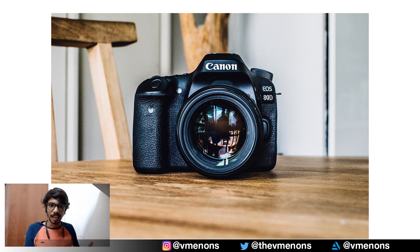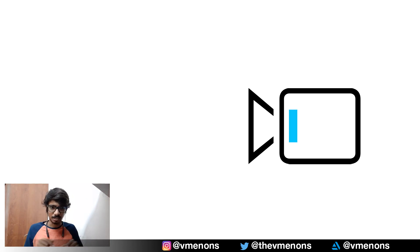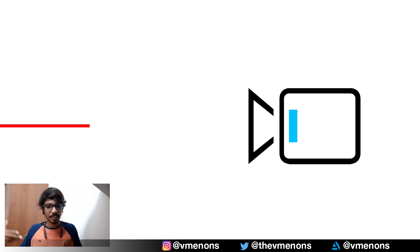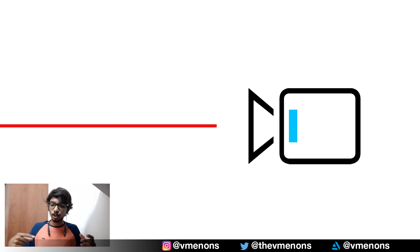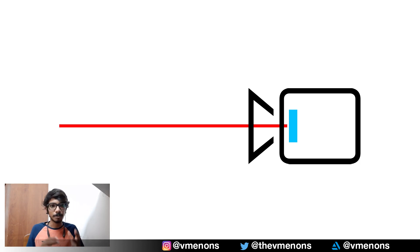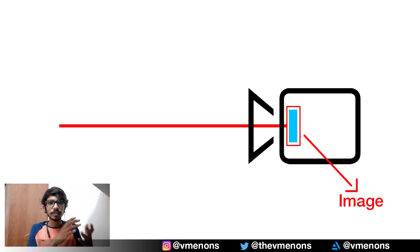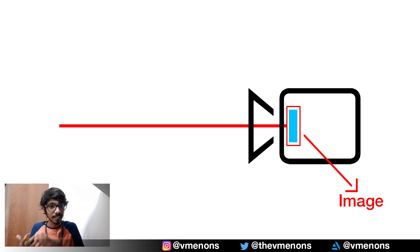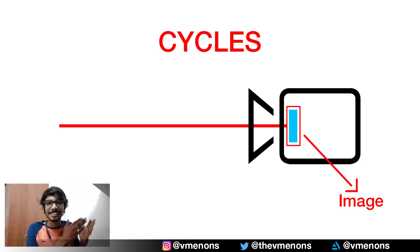So let me explain. To understand this, we need to understand how an actual camera works. You have this camera, and inside a camera you have this sensor which is photosensitive — sensitive to light. A ray of light goes inside the camera, hits the sensor, and the sensor records it, captures that light, and creates an image based off of the data from the light it captured. That is how a camera works, and that is exactly what Cycles does.